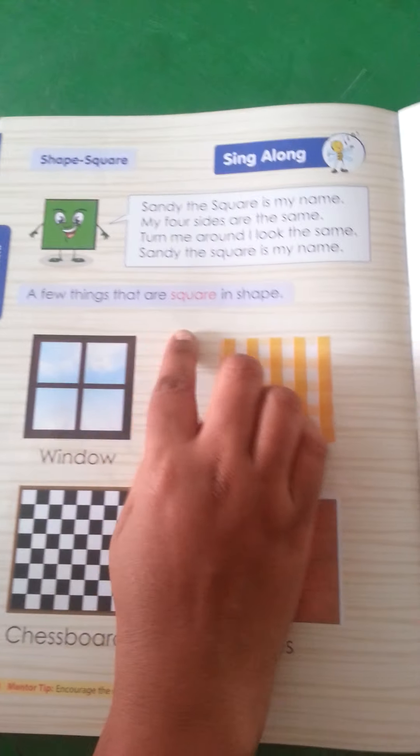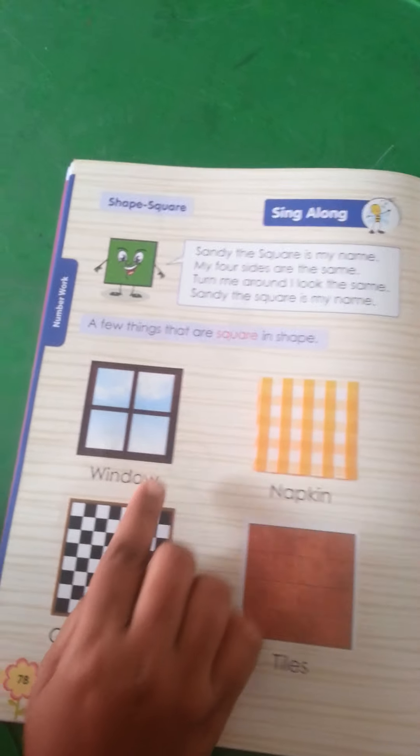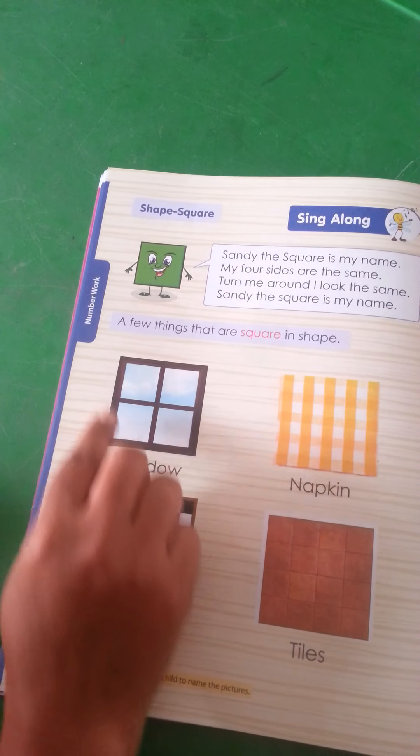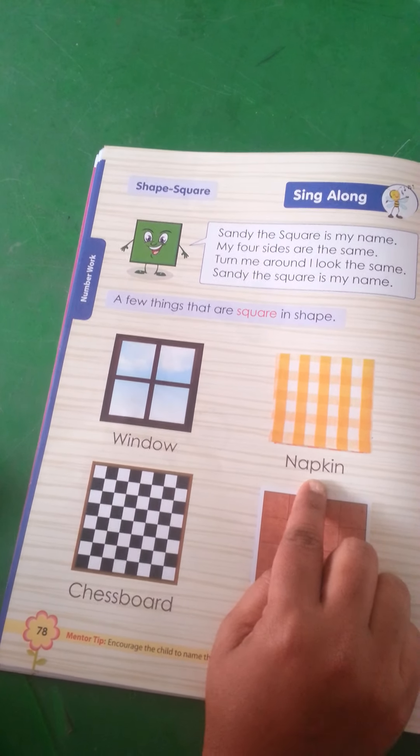A few things that are square in shape. See this window? Window is in a square shape. See this napkin?